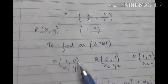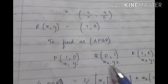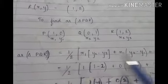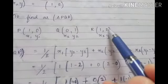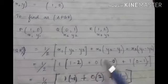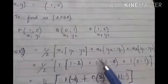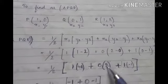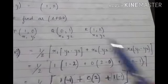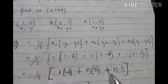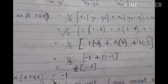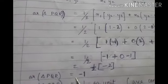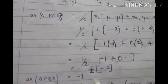Now we have x1y1, x2y2, and x3y3 for triangle PQR. Applying the area of triangle formula and substituting the values: (y2 - y3) = 1 - 2 = -1; x1 = 1, x2 = 0, x3 = 1. Computing: 1×(-1) + 0×(2 - 0) + 1×(0 - 1) = -1 + 0 + (-1) = -2. So area = ½ × (-2) = -1.